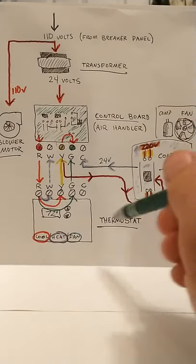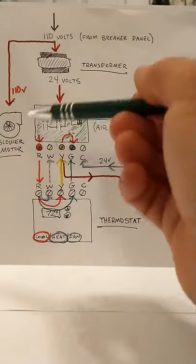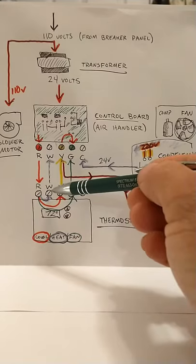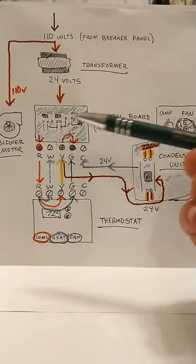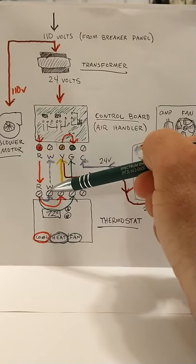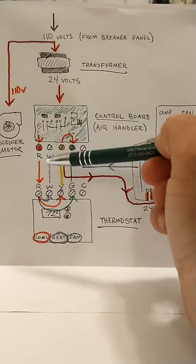Your heating system, when your thermostat's turned to heating, again it'll close the circuit between your R terminal in your thermostat and your W terminal, which is for heating. Your 24 volts will travel from that W terminal to your W terminal at the air handler.